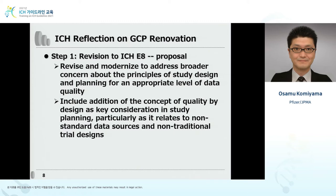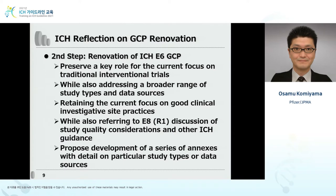E8R1 includes the addition of the concept of quality by design as a key consideration in study planning, particularly as it relates to non-standard data sources and non-traditional trial designs. The second step of GCP Renovation is E6R3. E6R3 preserves a key role for the current focus on traditional interventional clinical trials, while also addressing a broader range of study types and data sources. E6R3 retains the current focus on good clinical investigative site practices, while also referring to E8R1's discussion of study quality considerations and other ICH guidance documents.